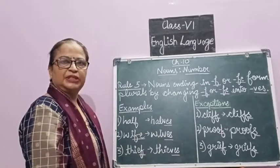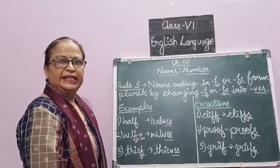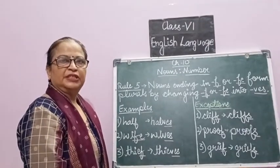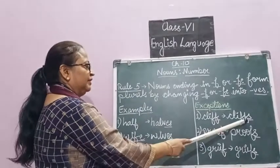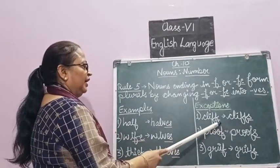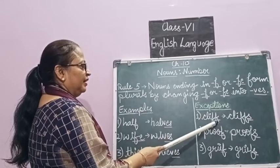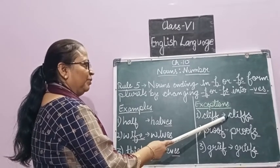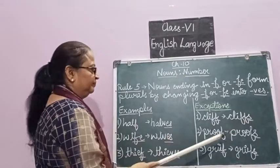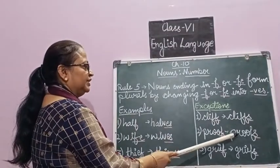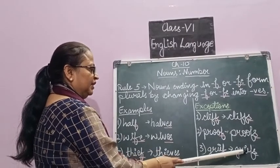There are certain exceptions also, where by simply adding S we change singular into plural. For example, 'cliff' is ending in F, but to make plural we add only S — giving 'cliffs'. Similarly, 'proof' changes into 'proofs', and 'grief' in plural is 'griefs', etc.